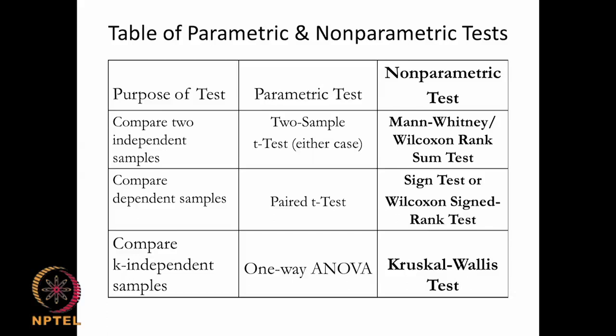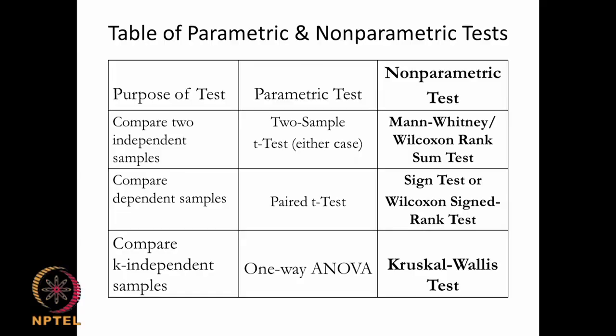When do you know it is non-parametric? If the homogeneity of variance is violated, or it is not a normal distribution or some standard distribution like T, F, or Z, or the data is ordinal with no variation with respect to time. Then we need to use these types of tests for comparing independent samples, dependent samples, or large numbers of samples. Later on we will also talk about how to test for homogeneity of variance.